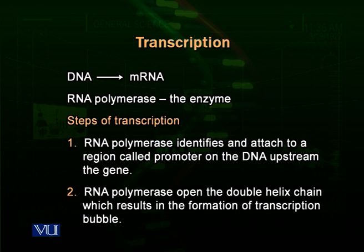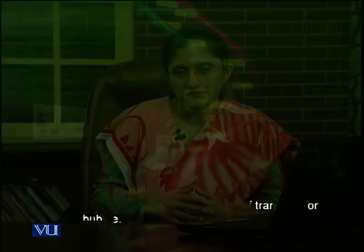As RNA polymerase moves through the gene, it opens up the double helix. This opened region appears as a bubble inside the double helix of DNA. We call it a transcription bubble, because the DNA strands are opened in a way that they appear as a bubble.